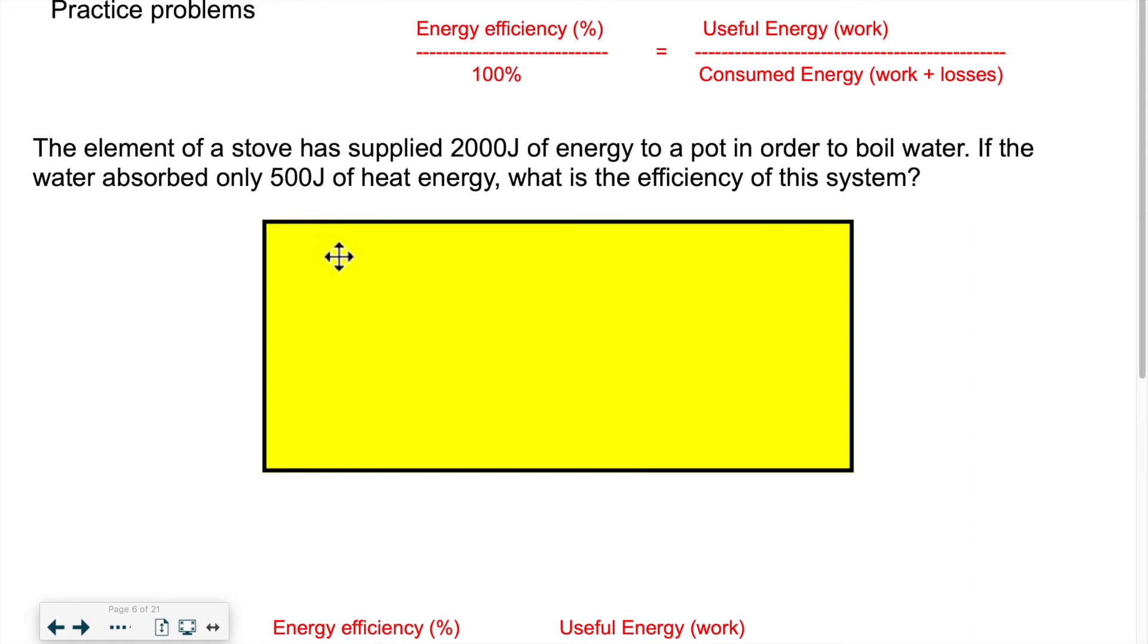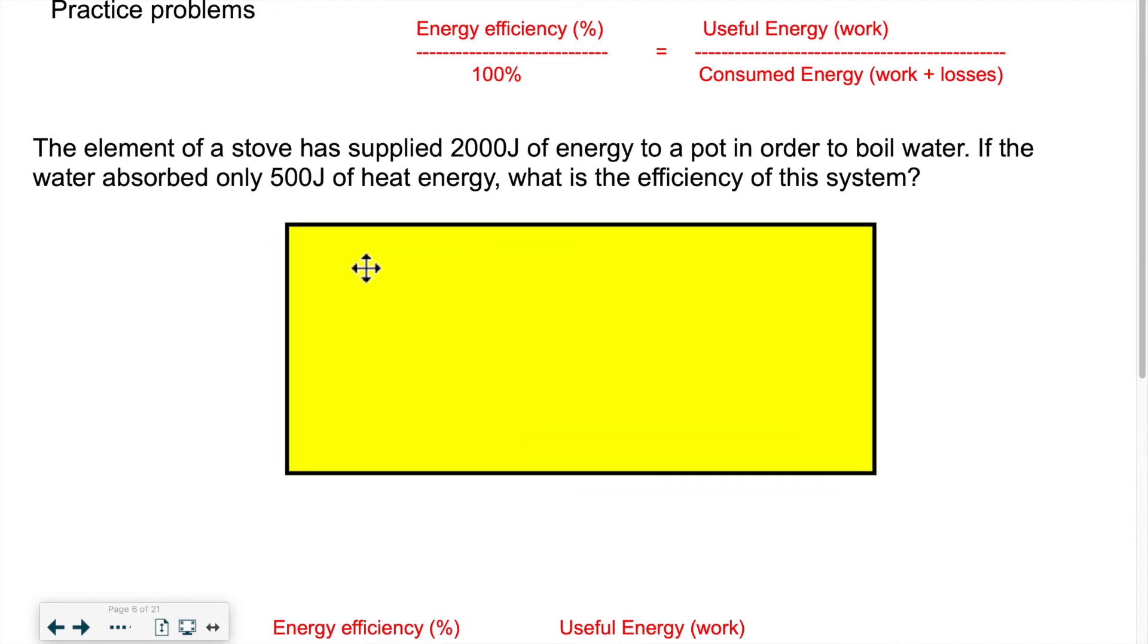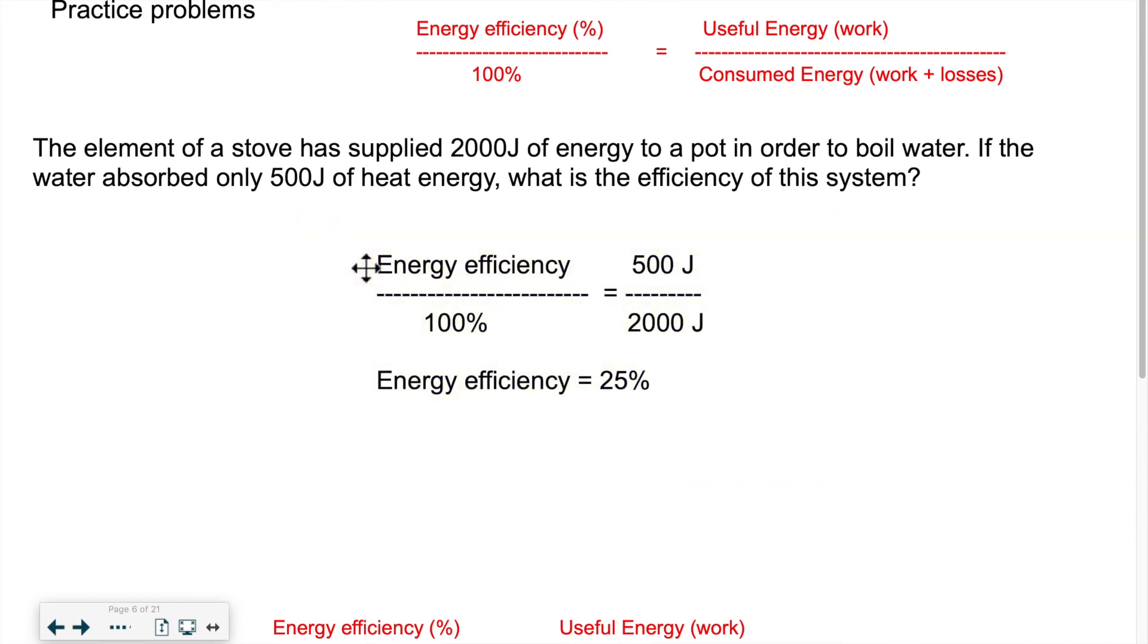So if we calculate the efficiency, let me just delete it. So we will have, if we replace, the amount of work is on top and the total energy is at the bottom. So 500 over 2,000 is equal to my energy efficiency per 100%. So as a percentage. So if we do the calculation, we get 25%. So we would do essentially 500 times 100 divided by 2,000 and I get 25. So that one is pretty straightforward.